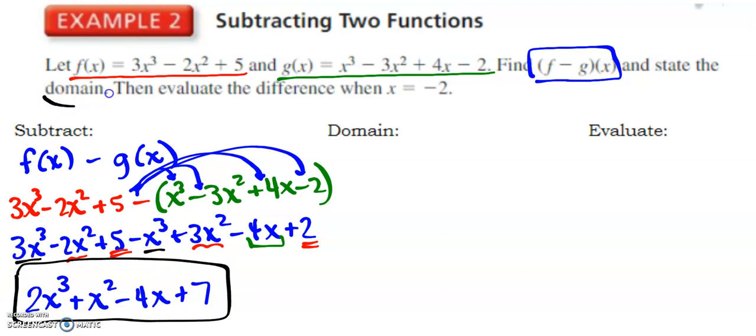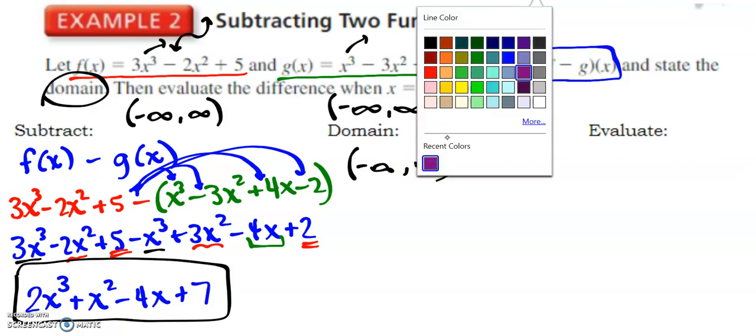The next part says to state the domain. Well, the domain of a cubic function is all real numbers. And the domain of another cubic function is all real numbers. Which means the domain of our new function is also all real numbers, or negative infinity to infinity.